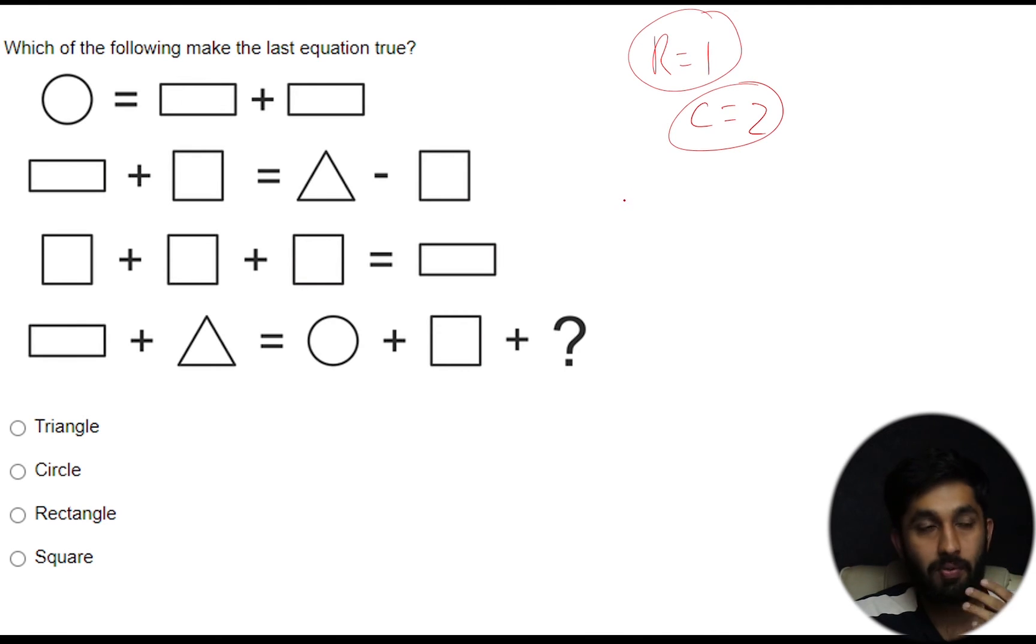Well to be honest with you it's not about which shape but which equation and which equation is the most simplest. Now here we've only got two variables, a square and a rectangle and we've got what our rectangle equals which is one. So let's attempt this.